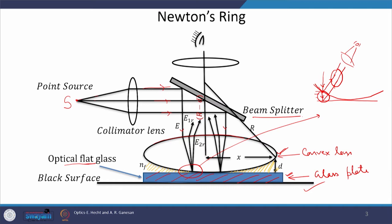In wedge shaped film, we saw that two glass plates are oriented at some angle and this arrangement forms a wedge shaped air film. Here too, the convex lens and the plane glass plate are forming a wedge, and in this wedge, the air film is responsible for the interference pattern observed in Newton's ring experiment. Suppose the incident ray has electric field amplitude E, the first reflected ray has amplitude E1r, and the second reflected ray has amplitude E2r. These reflected beams E1r and E2r interfere and produce interference fringes.